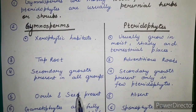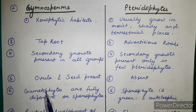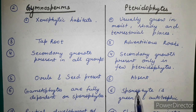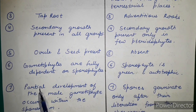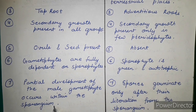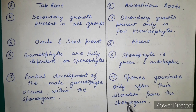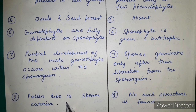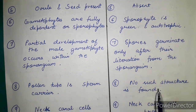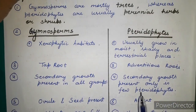Ovules and seeds are present in gymnosperms but absent in pteridophytes. Gametophytes are fully dependent on sporophytes in gymnosperms, but in pteridophytes the gametophyte is green and autotrophic. Male gametophyte development is partial within the sporangium in gymnosperms, while pteridophyte spores germinate only after liberation. Pollen tube is present in gymnosperms as a haustorial sperm carrier, but absent in pteridophytes. Neck canal cells are absent in gymnosperms but present in pteridophytes. These are the affinities between gymnosperms and pteridophytes.